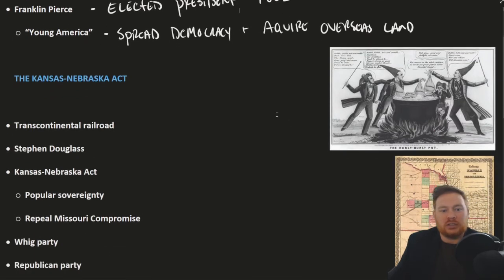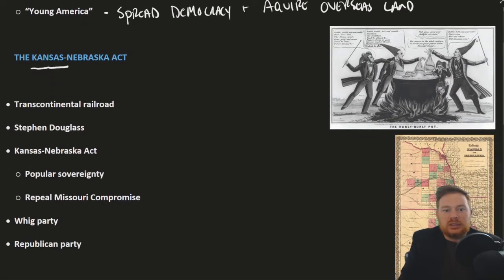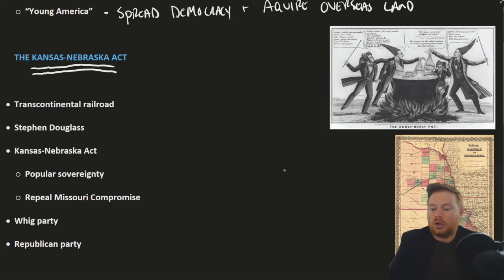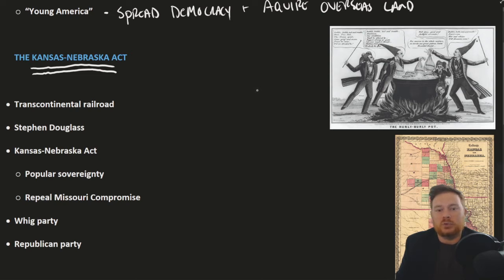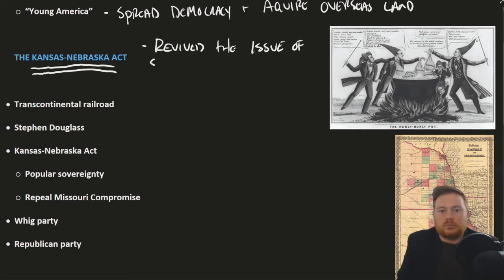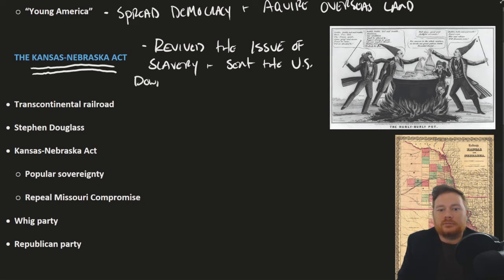However, that all changed with the Kansas-Nebraska Act. The Kansas-Nebraska Act might be the most consequential — maybe even the most important — law ever passed in American history, because it revived the issue of slavery in a way that ultimately led to the Civil War.